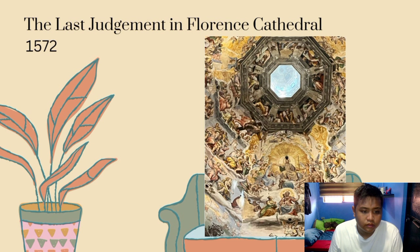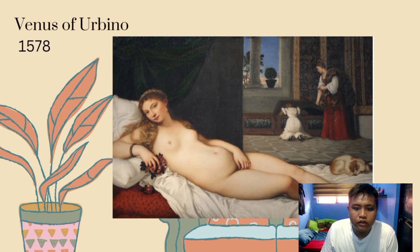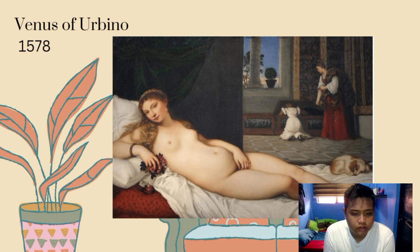The Last Judgement in Florence Cathedral, 1572. Giorgio Vasari (1511–1574) is a towering figure of the Italian Renaissance — an artist and architect himself, he is best known for his biographies of the artists of this period. Venus of Urbino, 1578: Titian (1485–1576), the greatest painter of the Venetian school, did not spread his talent widely. He stuck to his craft and left a huge body of work that includes erotic mythologies.